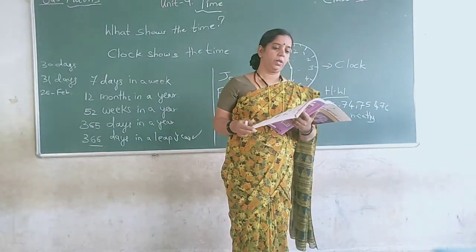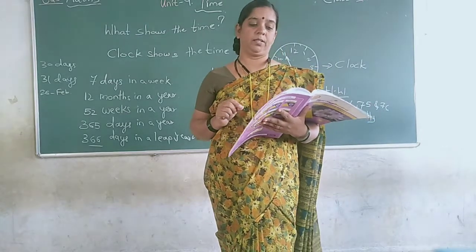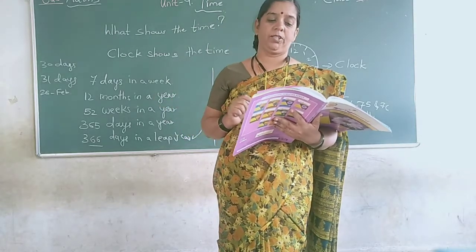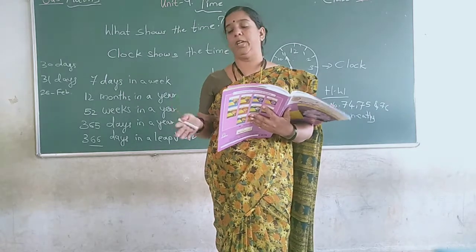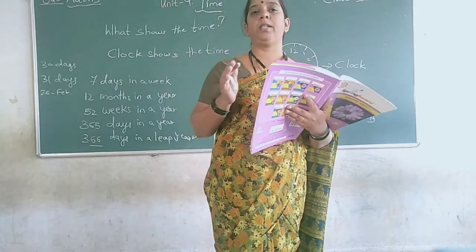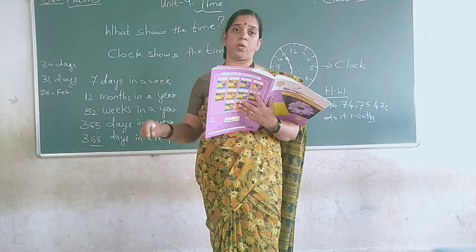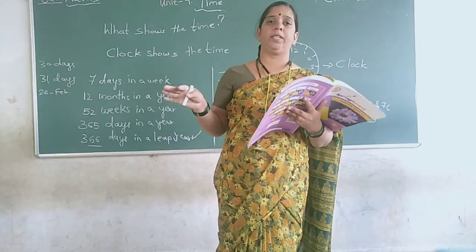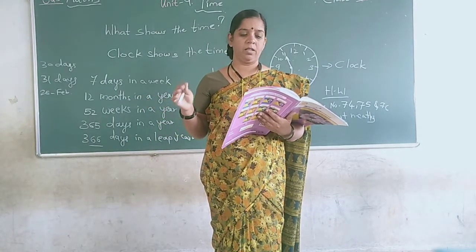Exercise 9.3 is about the sequence of events. Certain human activities or events in nature follow a certain sequence. For example, a woman wants to grow a plant. First she gets a pot, soil, and seeds. Then she fills the pot with soil, waters it for 2 days, plants the seeds, and waters the pot every day. Sequence these events in the right order.